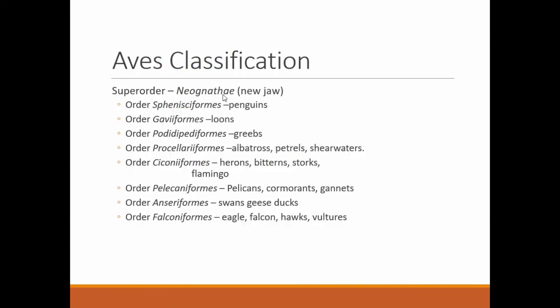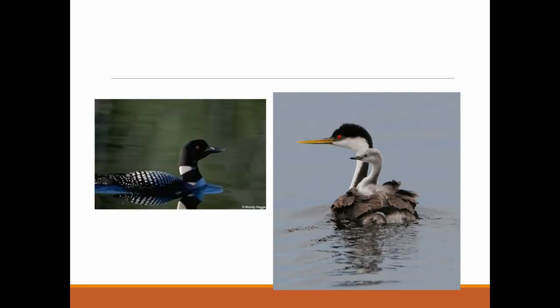Continuing with classification: Super order Neognathae (new jaw) includes order Sphenisciformes (penguins), Gaviiformes (loons), Podicipediformes (grebes), Procellariiformes (albatross, petrels, shearwaters), Ciconiiformes (herons, bitterns, storks, flamingos), Pelecaniformes (pelicans), Anseriformes (swans, geese, ducks), and Falconiformes — your birds of prey: eagles, falcons, hawks, and vultures, also known as raptors. Here are some examples including the loon and the grebe.